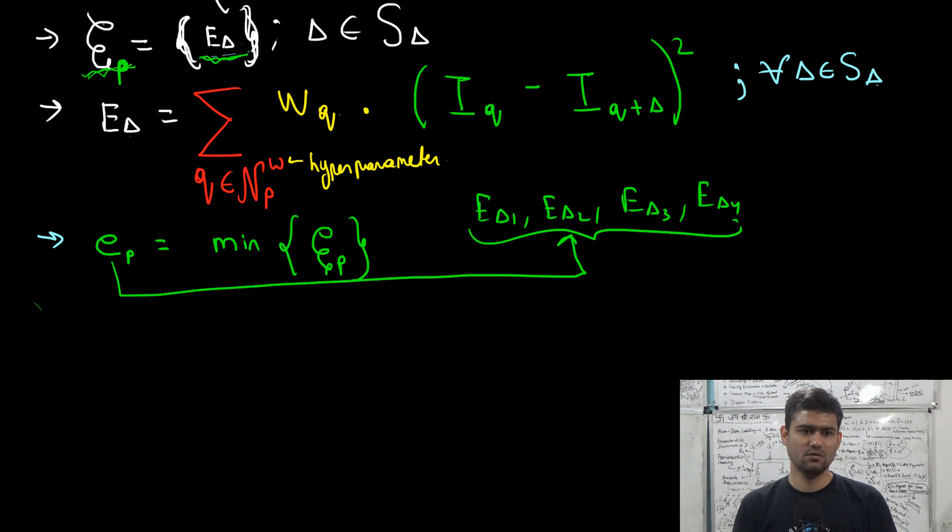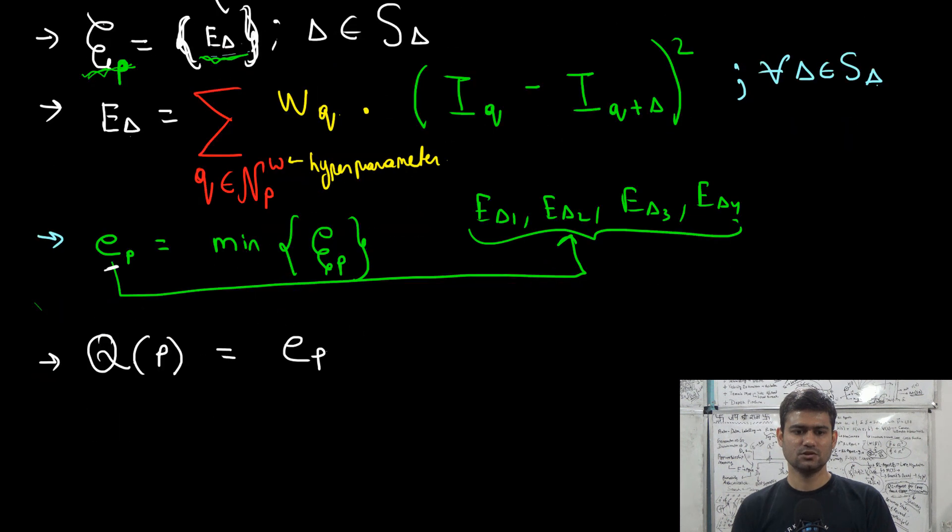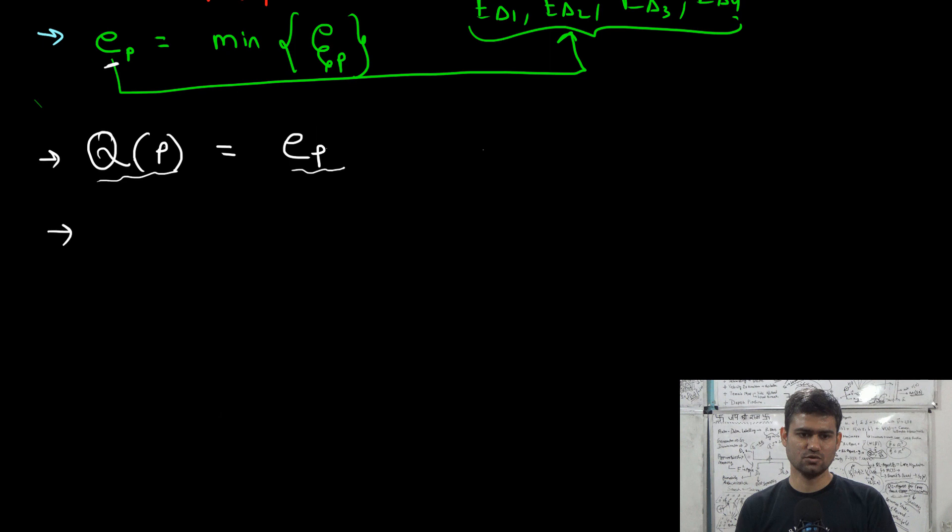And then once we have computed this minimum error term for each of the pixels, we can just form an image of the minimum error values. So we form an image, let's suppose we call it image Q, whose value at location P is going to be E_P. So in this image Q of minimum error values we compute local maxima. So corners are local maxima in Q.